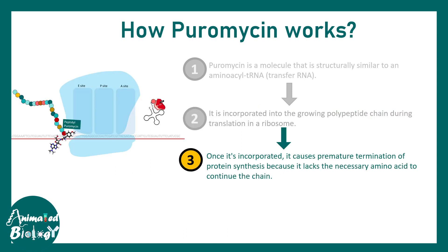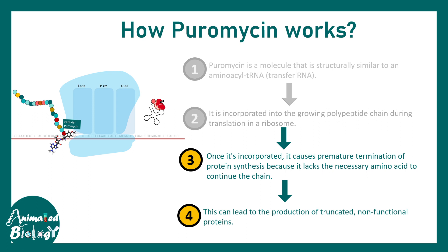Once this is incorporated, no new aminoacyl tRNA can transfer its peptide group. That is why this puromycin-linked peptide moiety has to be dislodged from the ribosome, and thereby a truncated version of the protein is produced. Full-length protein is never synthesized.